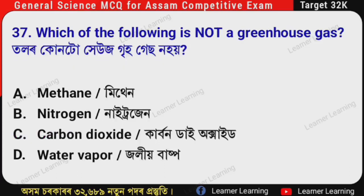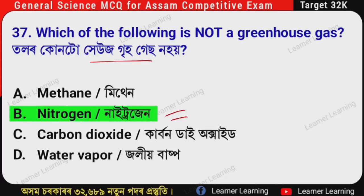Next question: Which of the following is not a greenhouse gas? (Assamese: Tonor konto heus griho gas nao hai?) The correct option is Option B — Nitrogen. Nitrogen is not a greenhouse gas. The remaining three — Methane, Carbon dioxide, and Water vapor — are greenhouse gases.